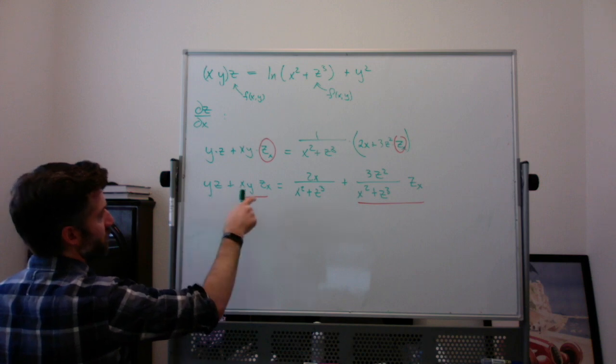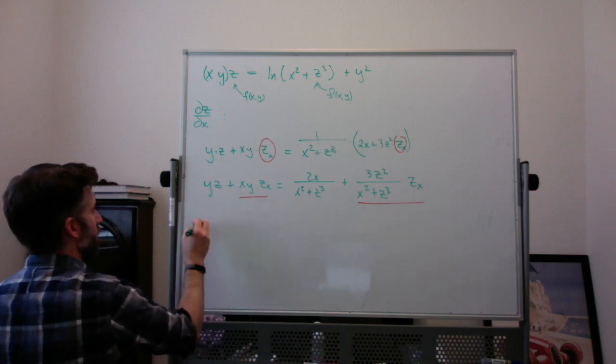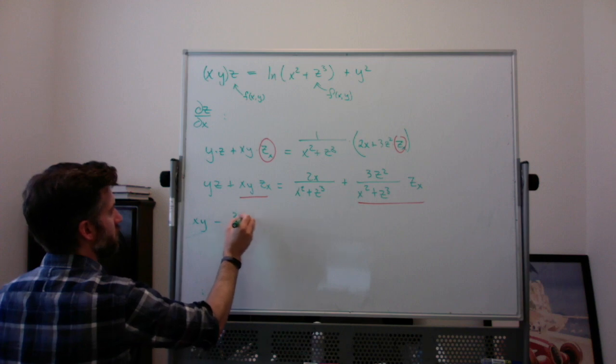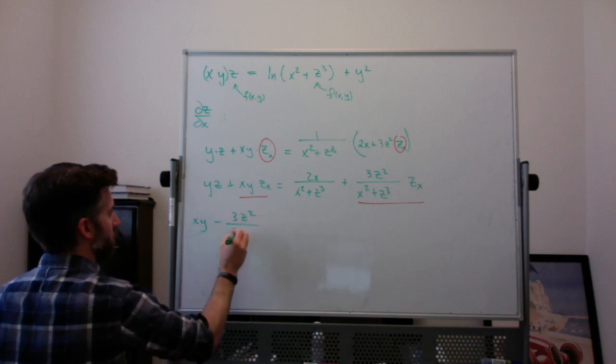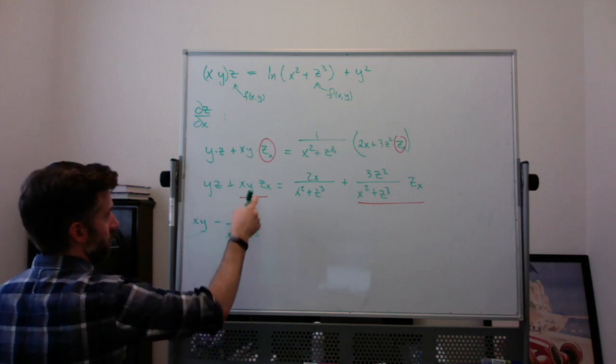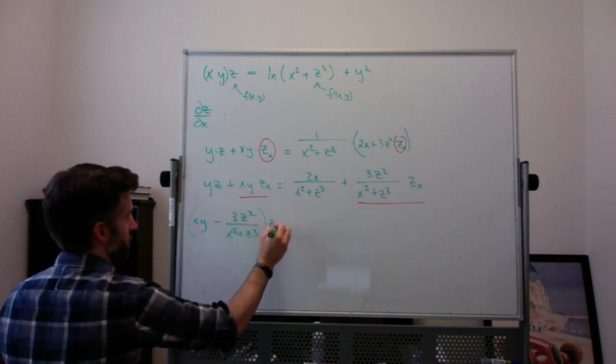So I have, I want this minus that. So I have xy minus 3z² over (x² + z³). And I'm going to factor out the zx in that same step.